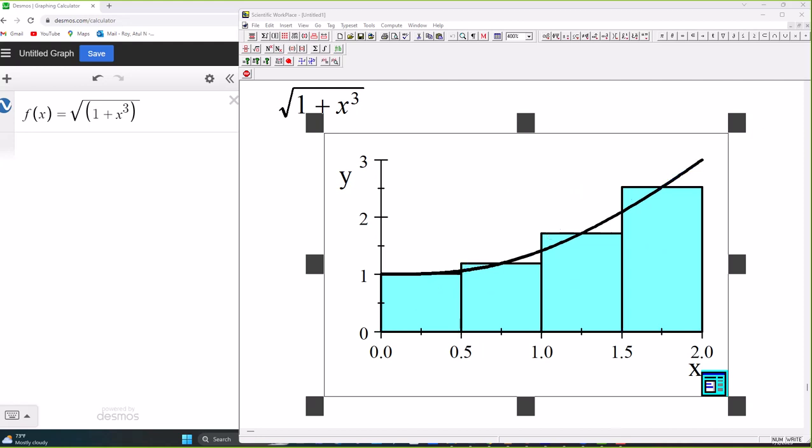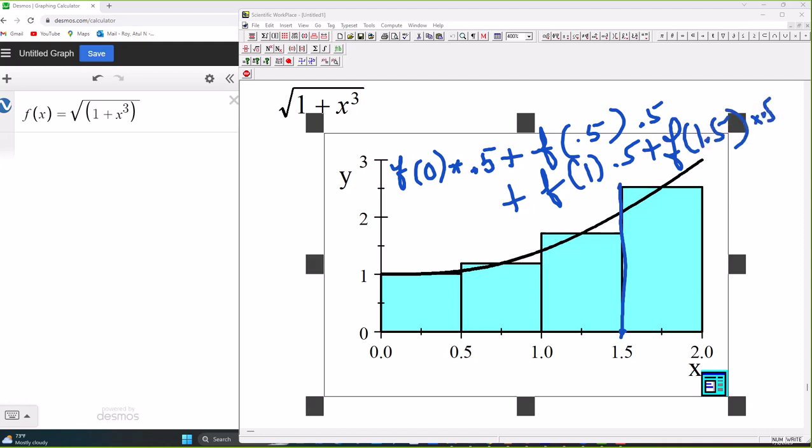So what we have is that all these will add up to f at 0, because that's what this height is, this is the y value for x equals 0, which is 1. That's the altitude. So we have f(0), and then times the width, that is 0.5, and then we have f at 0.5, multiplied by 0.5, then f at 1 multiplied by 0.5, then f at 1.5 times 0.5.